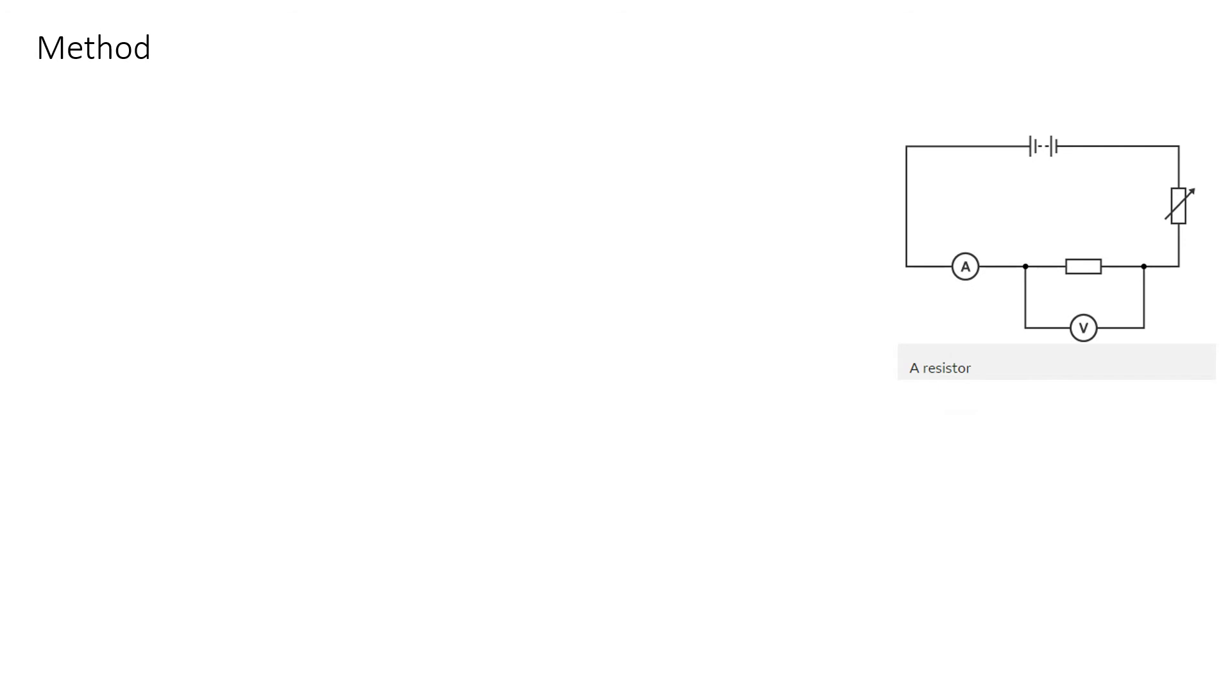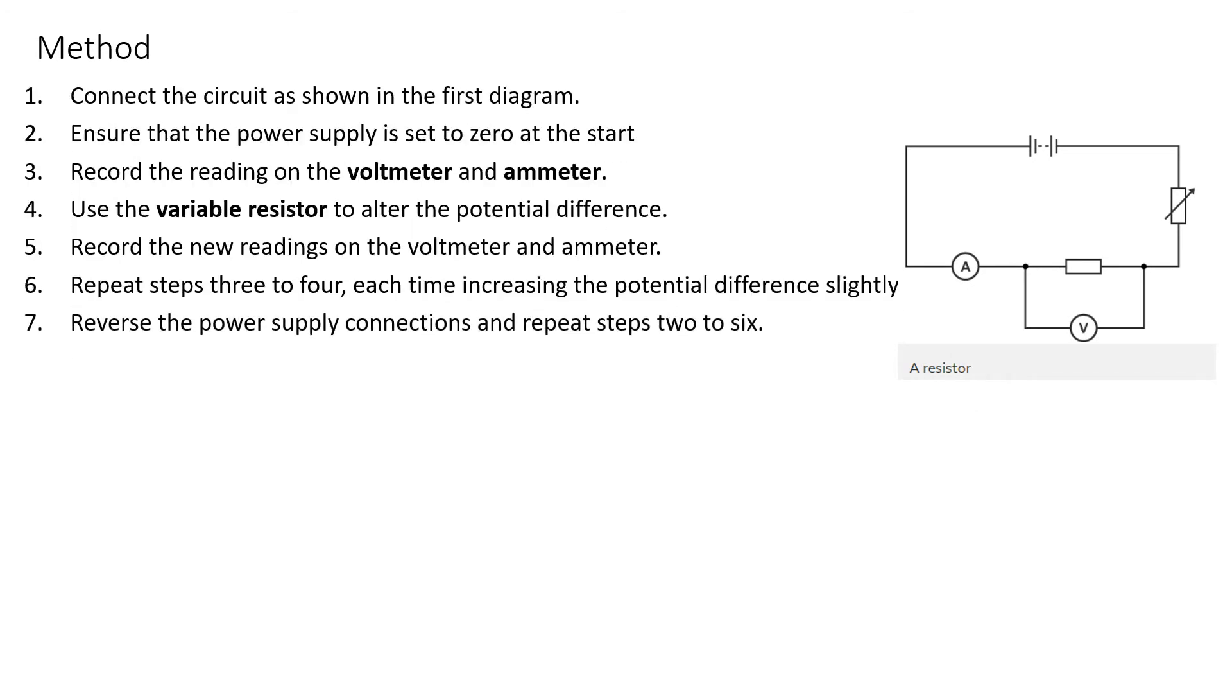Here's our practical. We've got seven, maybe eight steps. You don't need to learn a different graph for each practical, but you do need to memorize this circuit. We've got the resistor with the voltmeter attached in parallel, the ammeter attached in series, and a variable resistor over here. The rectangle is my resistor, the rectangle with the arrow through it is my variable resistor. We're going to connect the circuit as shown, ensure the power pack is set to zero, and check that the voltmeter and ammeter are not measuring anything, so we don't have zero error.